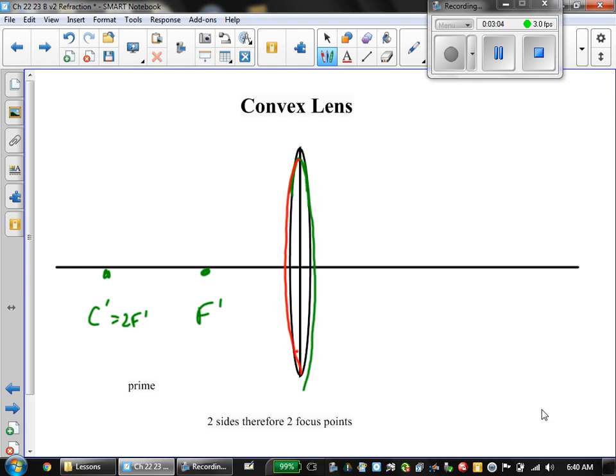We're going to have over here an F and a 2F, sometimes called C. So different books call it different things, but it's the same basic geometry we had before. We still have our principal axis cutting through the center and the vertex—the same vocabulary.